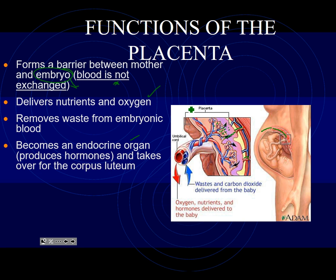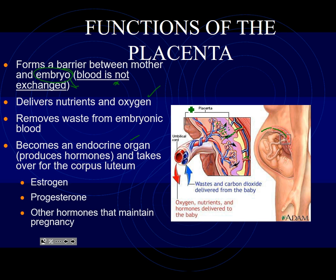The placenta starts producing progesterone and estrogen so that the pregnancy is maintained — meaning it's keeping the mom from getting rid of the baby. The baby lives inside this placenta, and the umbilical cord grows a few weeks after conception. Your navel, your belly button, is your umbilical scar. The umbilical cord connects into the placenta. The baby's blood vessels and the mom's blood vessels don't meet — the baby is dumping off its waste and absorbing oxygen and nutrients from the mom. Soon after childbirth, the umbilical cord is removed.